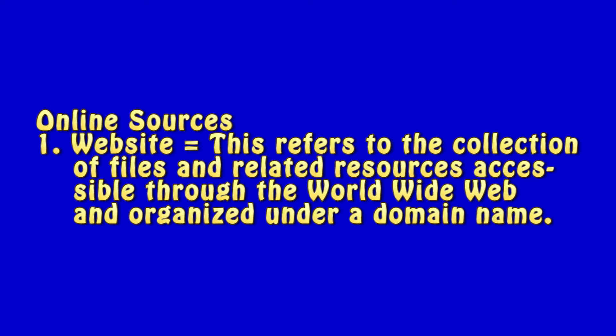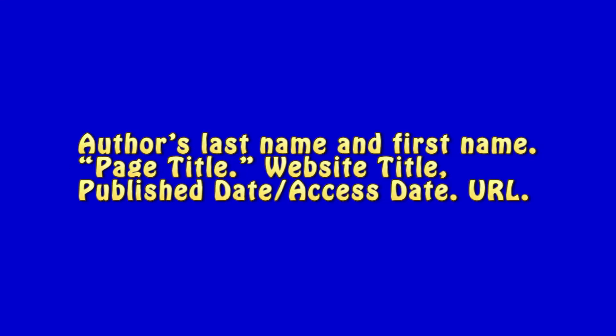Under online sources is the website. A website refers to the collection of files and related sources accessible through the World Wide Web and organized under a domain name. Here is the sample format for writing a website bibliography: author's last name, then first name, followed by the page's title, website title, publication date, access date, and don't forget to write the URL.